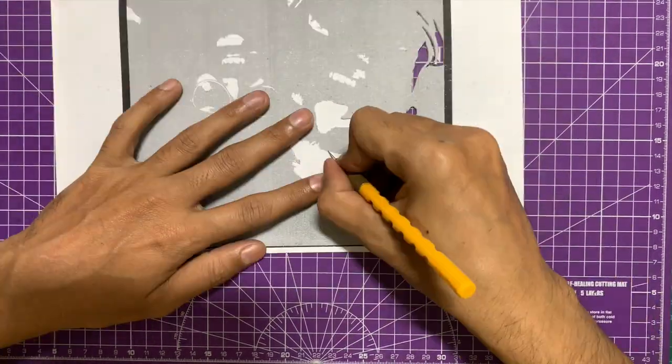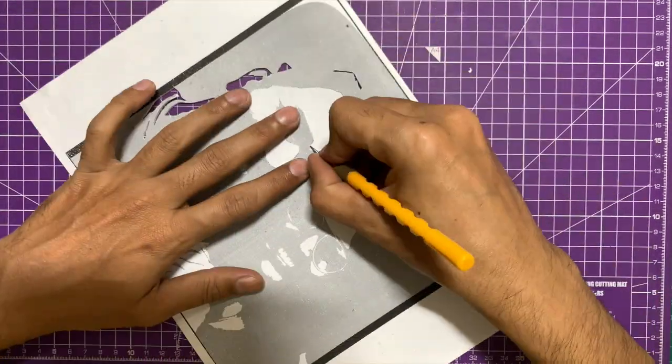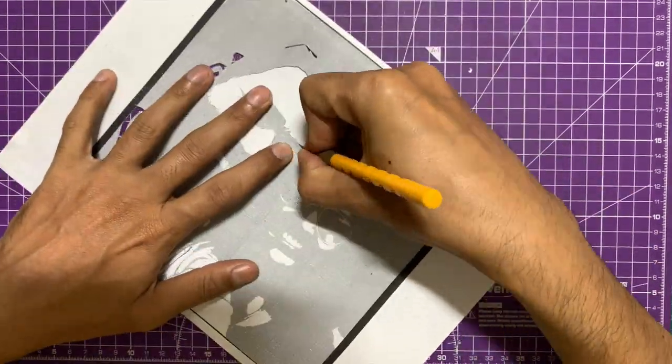Also, this paper is slightly textured and has off-white sheen to it, so the final effect looks far better on this kind of paper.